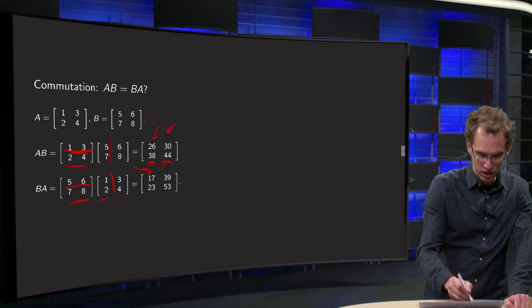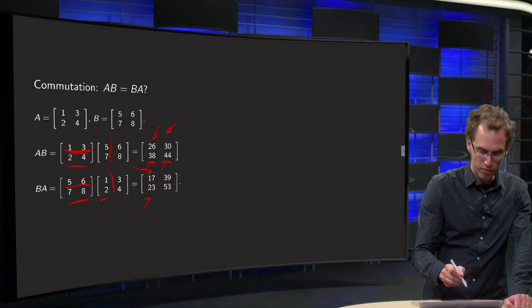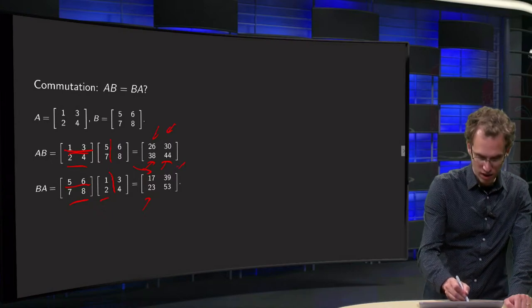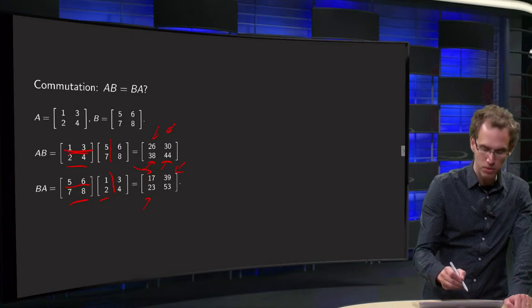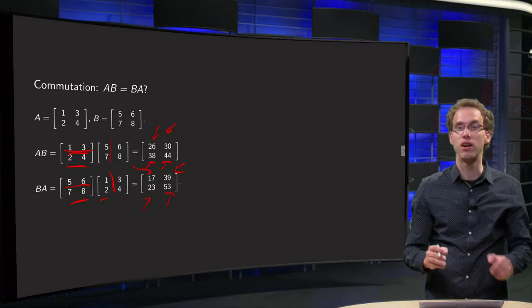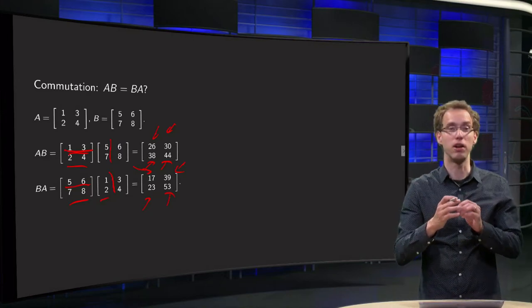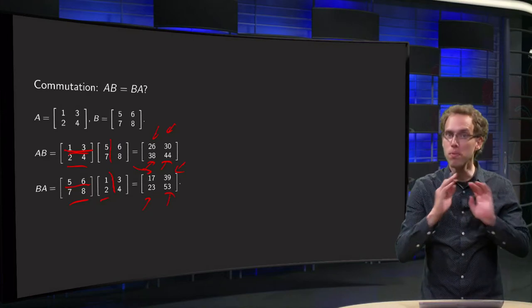7 plus 16 equals 23. 15 plus 24 equals 39. And 21 plus 32 equals 53. So A times B and B times A are completely not the same, completely different matrices.